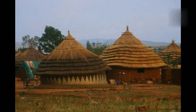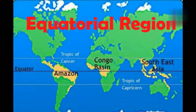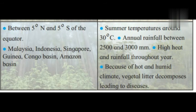Next is the Equatorial Region. The yellow color on this map shows the equatorial region of the world. Its extent and location is between 5 degree north and 5 degree south of the equator — Malaysia, Indonesia, Singapore, Guiana, Congo Basin, and Amazon Basin. Summer temperature is 30 degree Celsius and annual rainfall is between 2500 and 3000 millimeter.